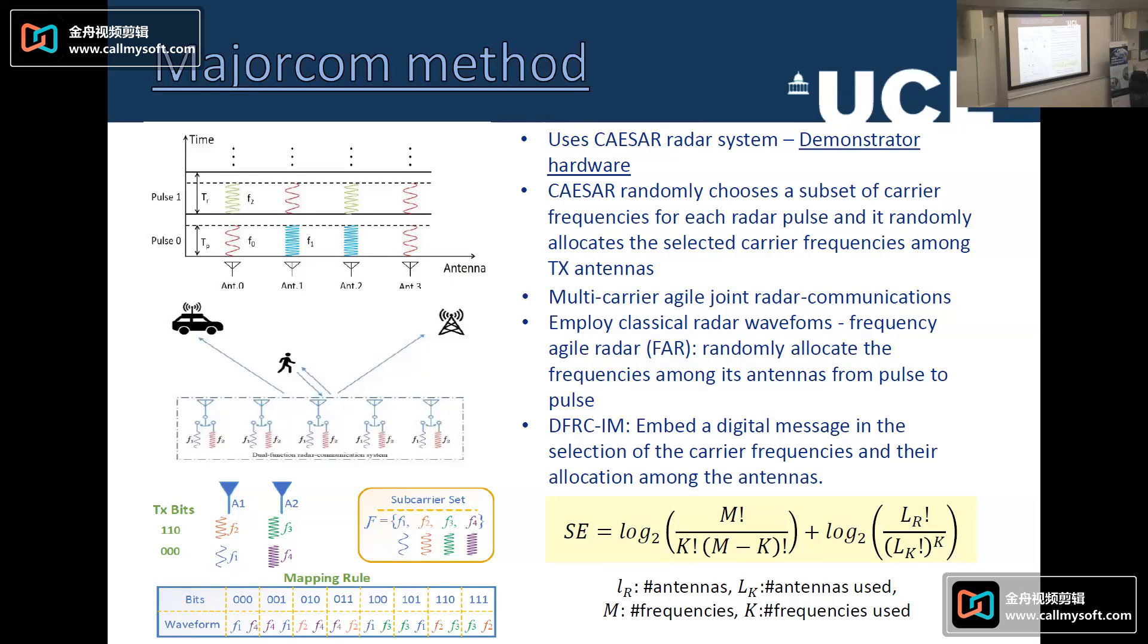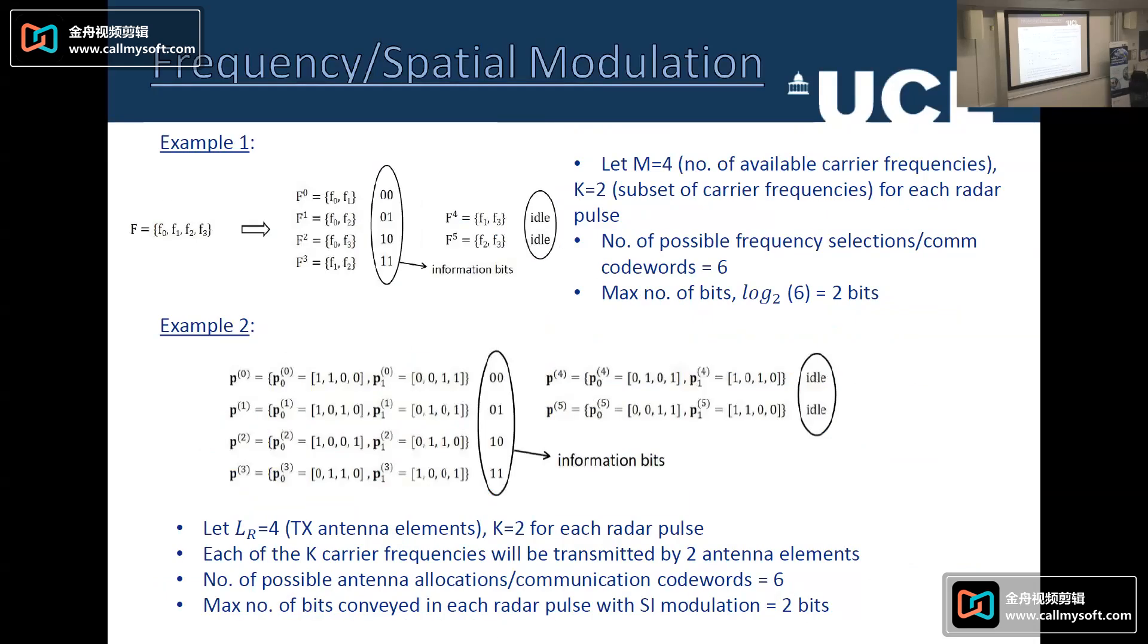The system randomly chooses a subset of carrier frequencies for each radar pulse, and it randomly allocates the selected carrier frequencies across the antennas. A multi-carrier agile joint radar communications concept, and it employs classical radar waveforms with a frequency agile radar randomly to allocate the frequencies among its antennas pulse to pulse. So I'm just talking about the central frequencies here and the antennas, but I haven't said what waveform's being transmitted. You can send a linear frequency modulated waveform. This is bread and butter for radar engineers. It provides good matched filtering, pulse compression, such that you get good signal-to-noise ratio on your target. You get good range resolution and the Doppler tolerances are acceptable. So you can take a very well known radar waveform and now start changing these parameters slightly on a pulse to pulse basis.